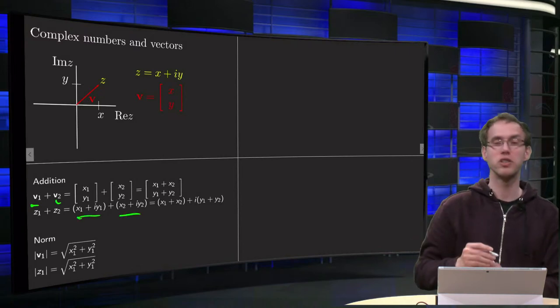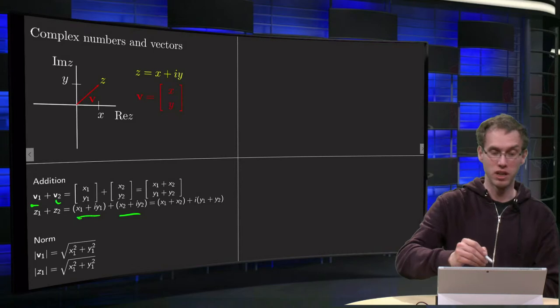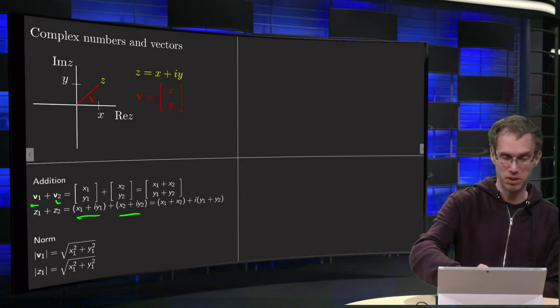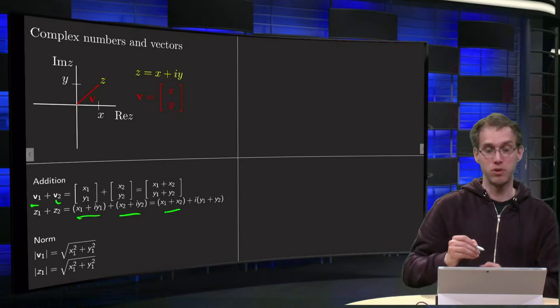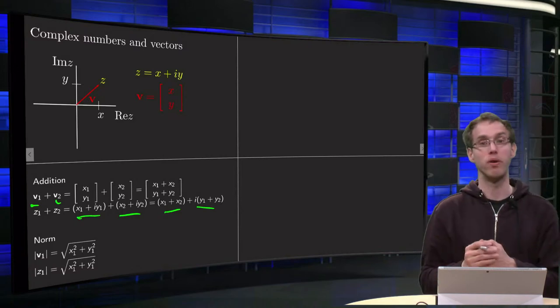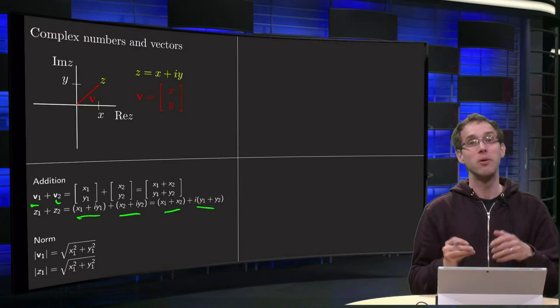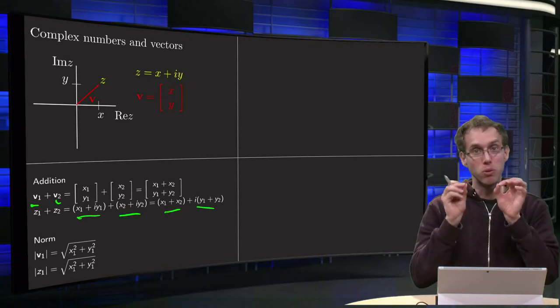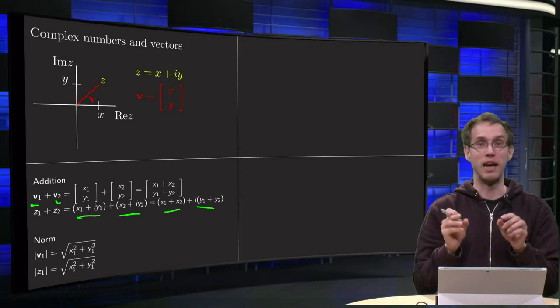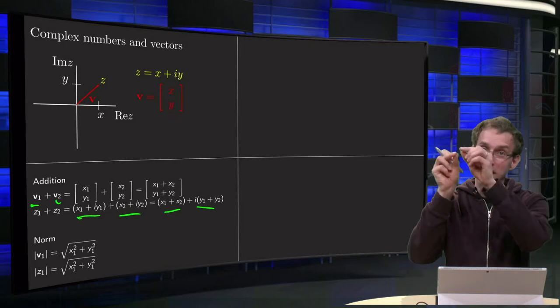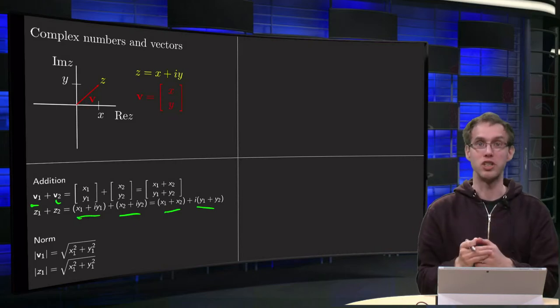And if you add two complex numbers, x1 plus i times y1 plus x2 plus i times y2, you get x1 plus x2 plus i times y1 plus y2, you also add those component-wise. So you can view addition of two complex numbers in the complex plane as addition of two vectors in the plane. That works the same.